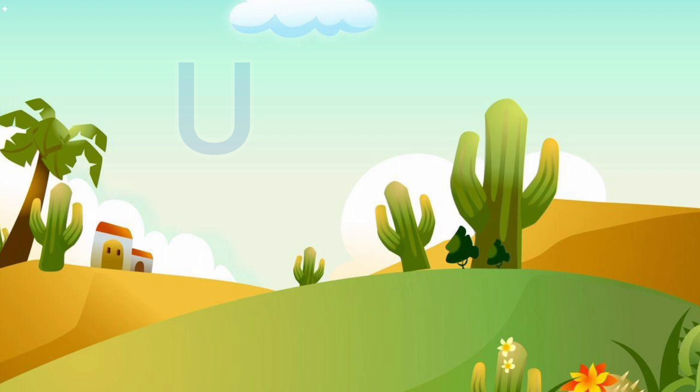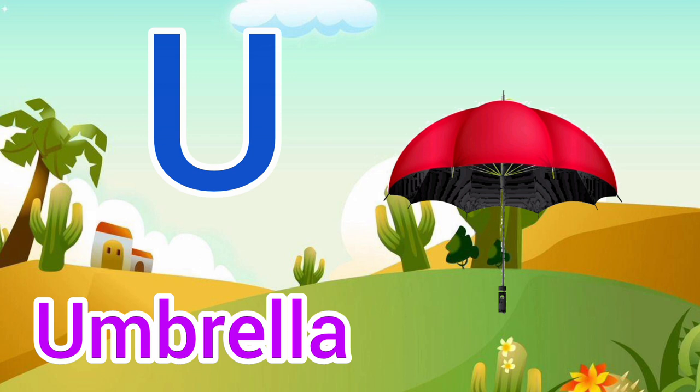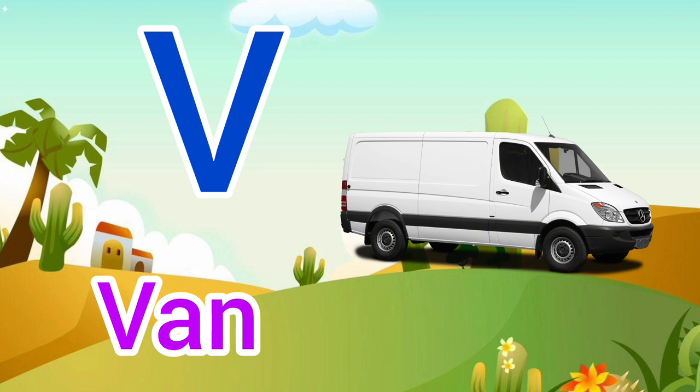U. U for Umbrella, Umbrella means Chata. V. V for Van, Van means Gaadi.